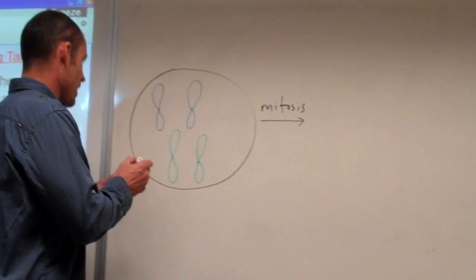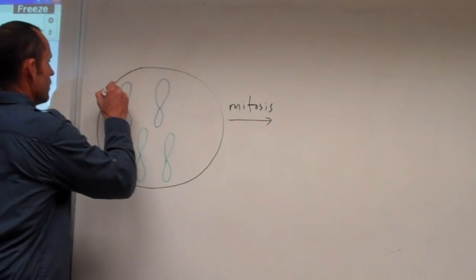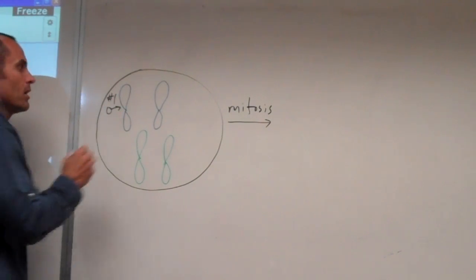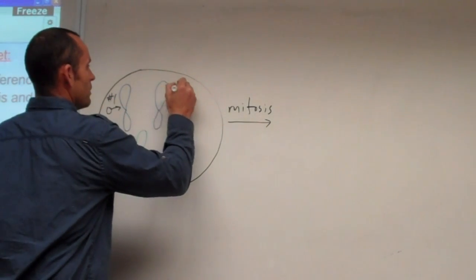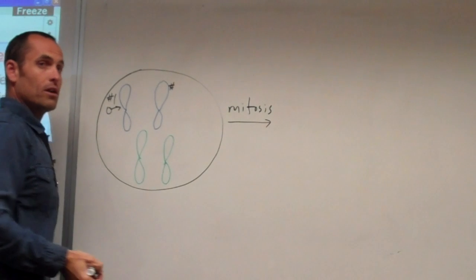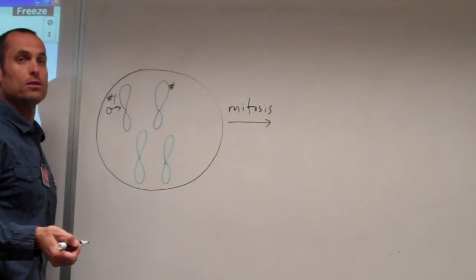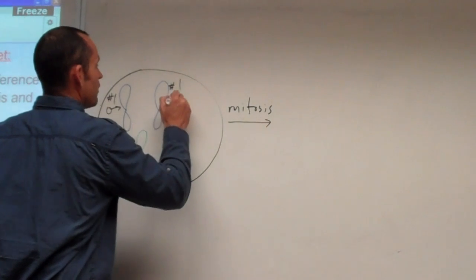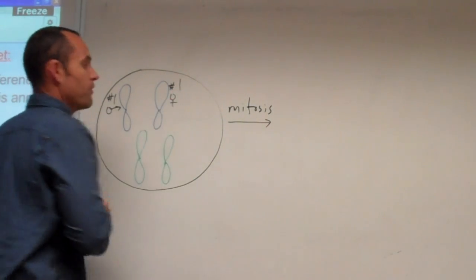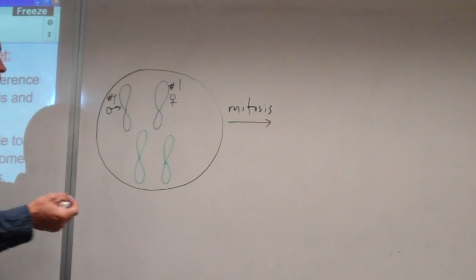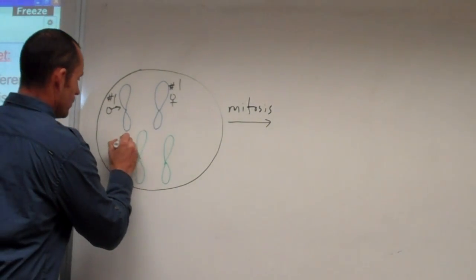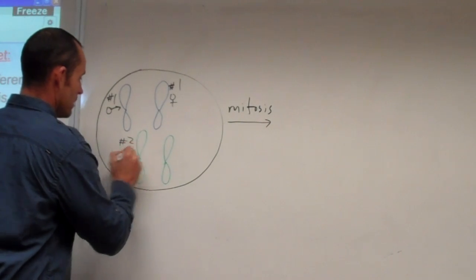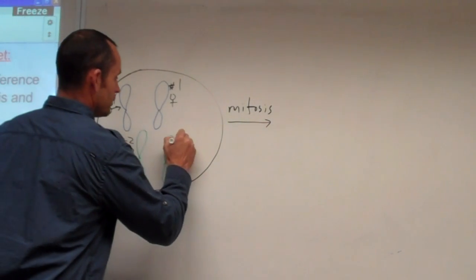I'm going to label this one right here. This is going to be the number one chromosome — the one I got from dad. This is the other number one chromosome, because you have 23 pairs. They're called pairs because they're homologous chromosomes. This is the other number one, and this is the one I got from mom. We're only using two pairs. This is the number two from dad and the number two from mom.